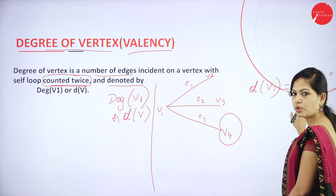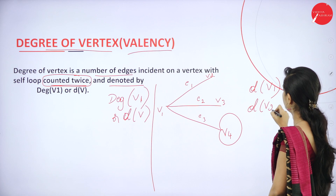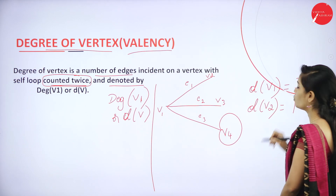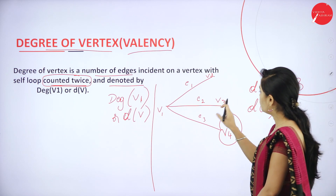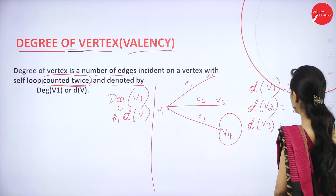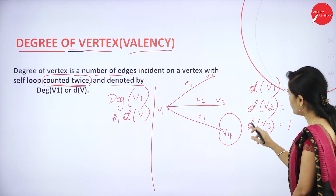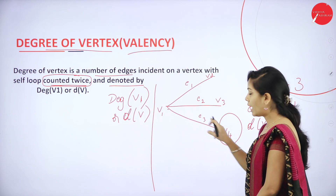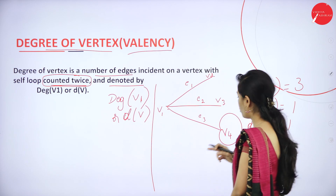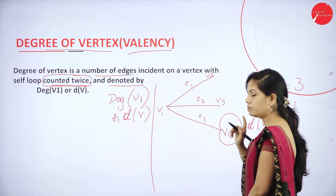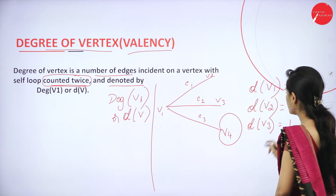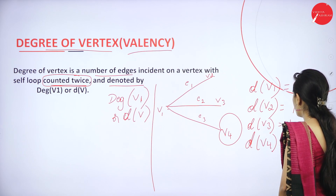And for V4 — V4 is connected to V1 and also has a self-loop. By the definition of degree of vertex, self-loop is counted twice. So V4 has 1 edge to V1 plus 2 for the self-loop, giving D(V4) equals 3. So the degrees are: V1=3, V2=1, V3=1, V4=3.